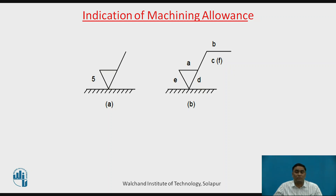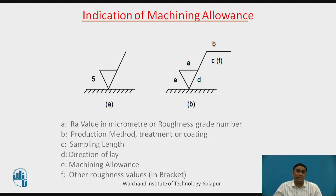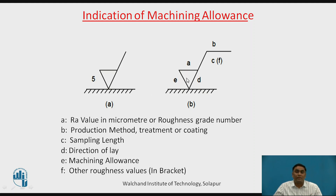Now we move to how machining allowance — or machining symbols — are indicated and what the meaning of each symbol is. You can see symbols A through F. A indicates the RA value in microns or micrometers, indicated with a value or triangular symbols. B is the production method — such as milling, drilling, finishing, or honing. C is the sampling length — up to what sample length it can be measured. D is the direction of lay; as per the manufacturing method, the lay direction may change.